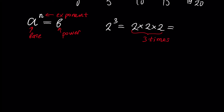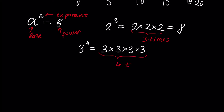Rising a number to a power — assuming the power is a whole number — means multiplying 2 by itself, done exactly 3 times, and the result will be 8. Another example: 3 times 3 times 3 times 3, done 4 times, and the result is 81.